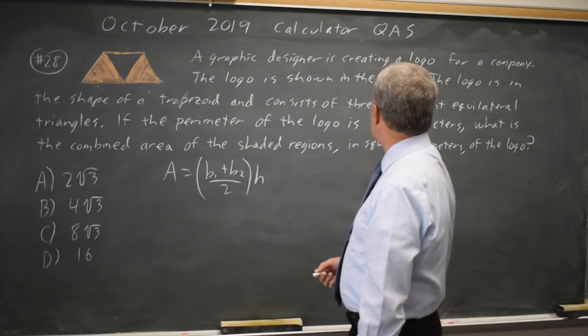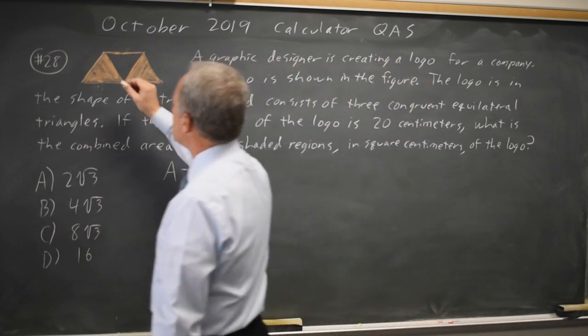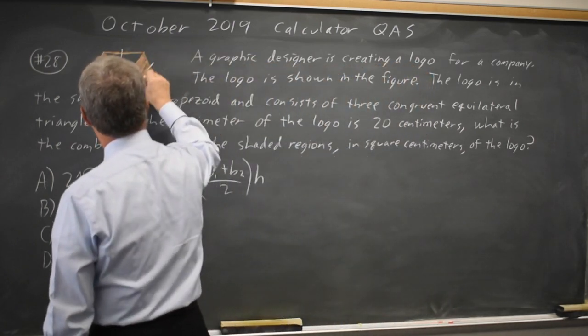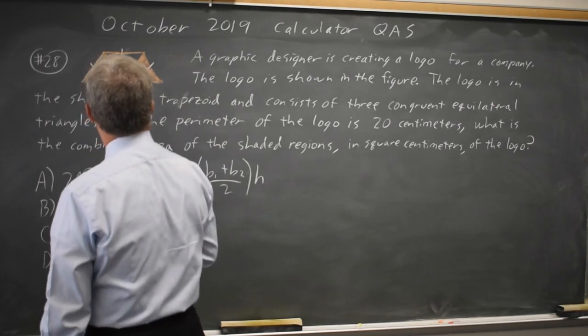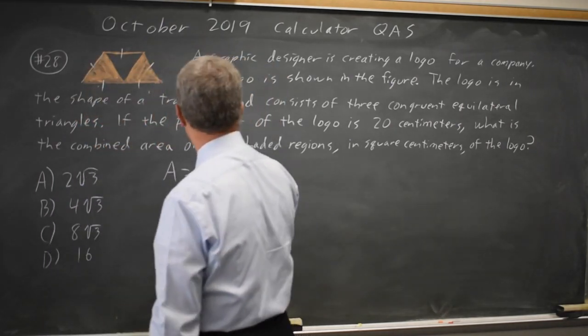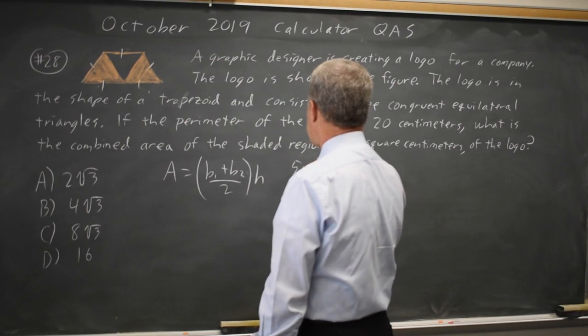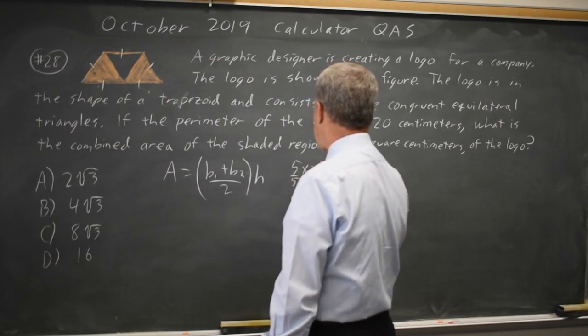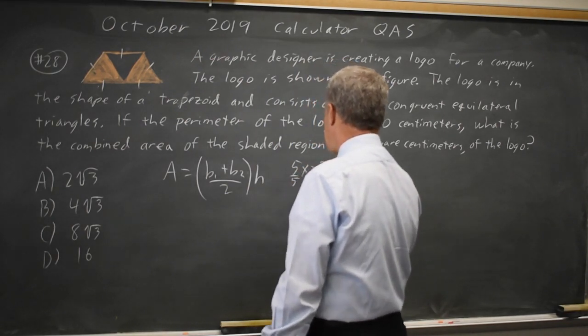Now to get the bases, we know the perimeter is 20, and these are equilateral. So these five segments are all equal. Let's call that x. 5x equals 20 divided by 5, x equals 4.